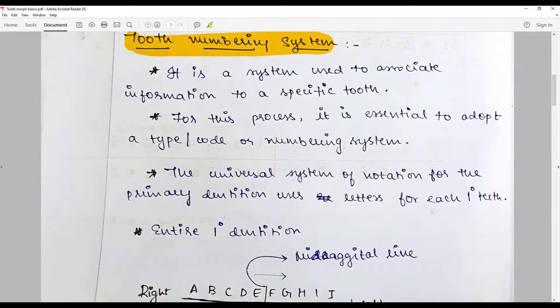To go over this briefly, we need to explain why there is a need. Tooth numbering system is a system used to associate information to a specific tooth. We need this for universally naming a tooth without any geographical or political considerations. Two central incisors should be denoted by a specific uniform nomenclature.